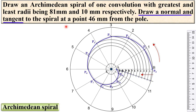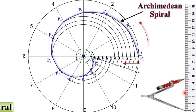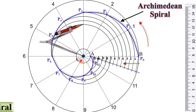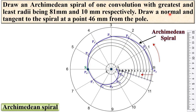Now the second part: draw the normal and tangent at a point which is 46 mm from the pole. This center of the circle is called the pole. First, give the name of this curve as Archimedian spiral. Now locate the specific point which is 46 mm from the pole — set the radius as 46 mm, take C as the center, draw the arc which will cut this Archimedian spiral at this point. Give the name as S. Now draw the normal and tangent at this S point.